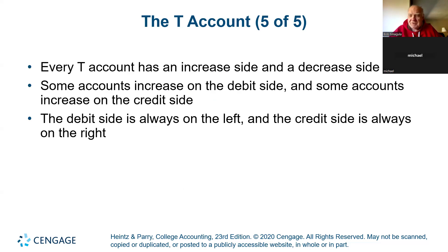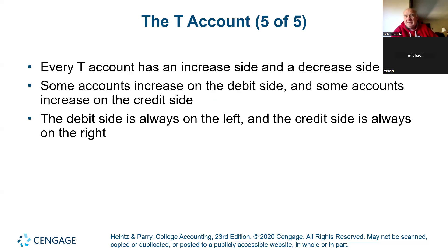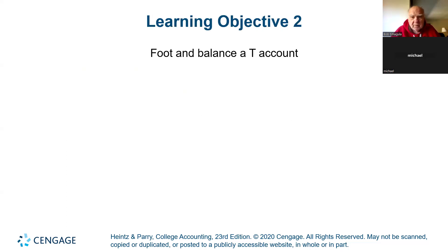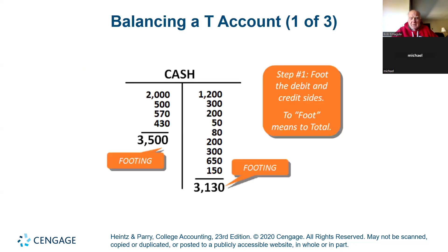Every T-account has an increase and decrease side. Here's where you're going to go through a little pain at first, until you memorize these few rules. Some accounts increase on the debit side, and others increase on the credit side. There are really only four things — or really five — that you have to remember. The debit side is on the left, credit's on the right. Here is your general ledger cash.